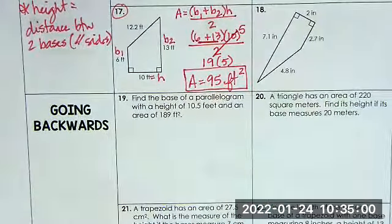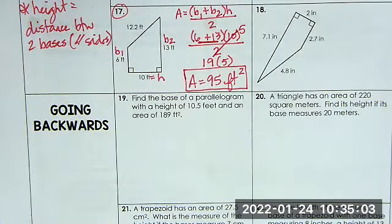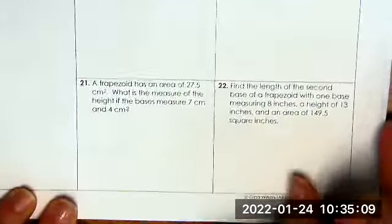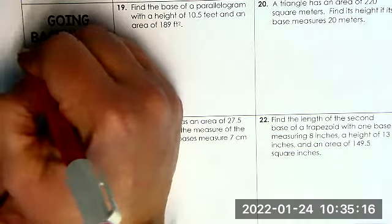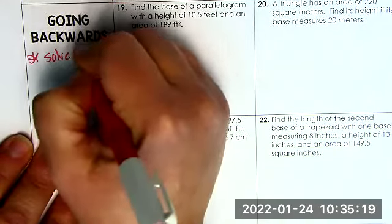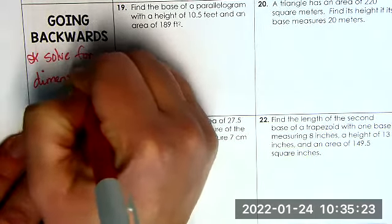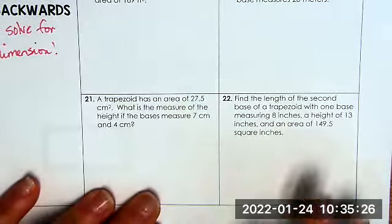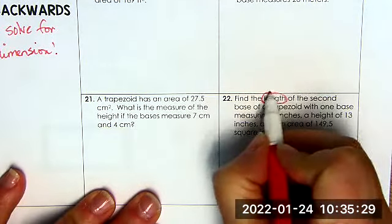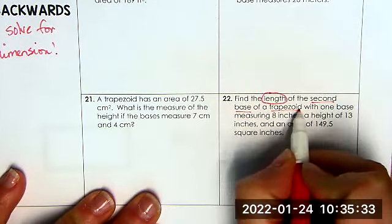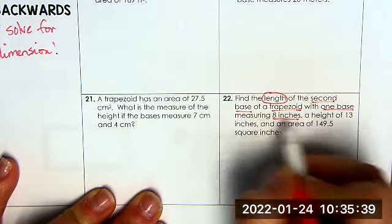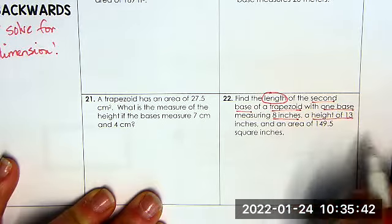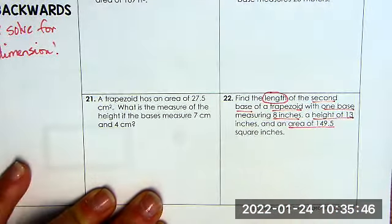Last problem for this video. There's two parts, two videos for this. One where it's just the shapes, a little bit of word problems, and then the other one is mainly word problems. So we're going to look at number 22. This is going backwards. This means we're not solving for the area, we're solving for one of the dimensions. Solve for dimension. So we want to find the length of the second base of a trapezoid with one base measuring eight inches, a height of 13 and an area of 149.5.